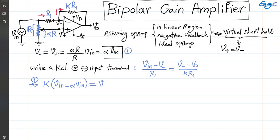I can write K(Vin - alpha*Vin) equals alpha*Vin - Vout. Now that we have everything as a function of Vout and Vin, we get Vout equals K(1 - alpha)*Vin minus alpha*Vin.